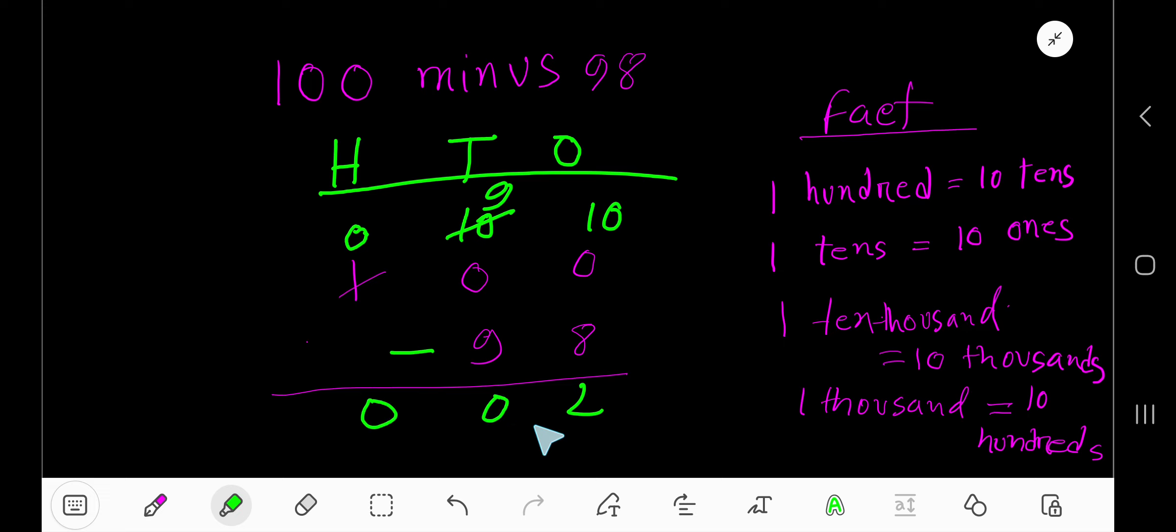Zeros on the left-hand side don't carry any value, so you can delete them. 2 is the answer.